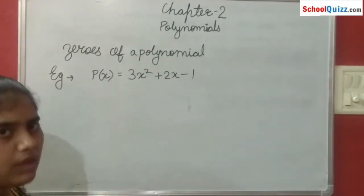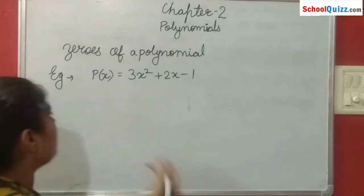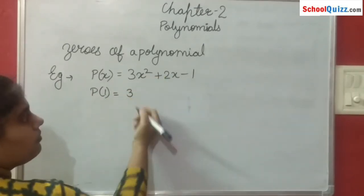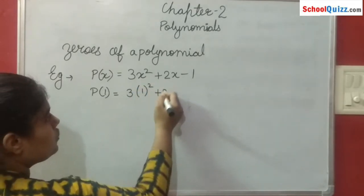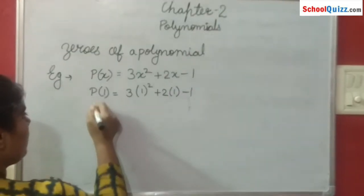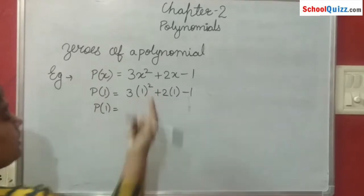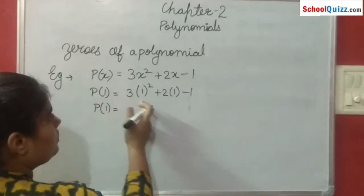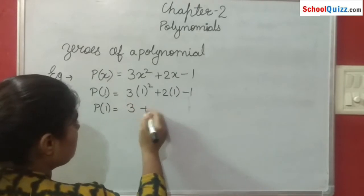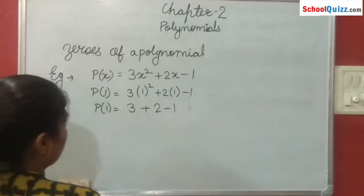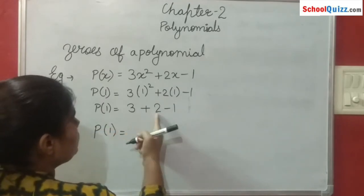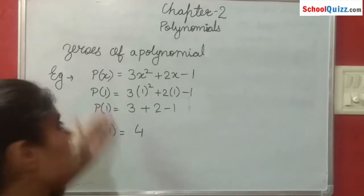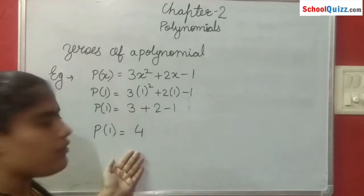Now replacing x with 1 — ہم x کی کچھ values put کر کے دیکھیں گے. First of all we will replace x with 1. 3x square means 3 times 1 square plus 2 into 1 minus 1. Now P(1) equals to 3 — 1 کا square 1 ہے. So 3 times 1 is 3, plus 2 times 1 is 2, minus 1. 3 plus 2 is 5, 5 minus 1 is 4. So P(1) کی value 4 آئی — we got the value 4 when we replace x with 1.